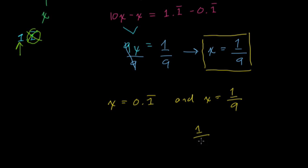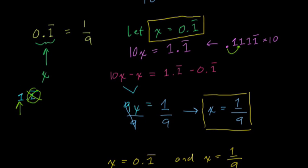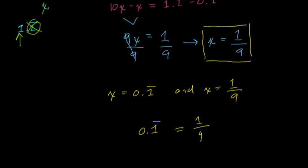then they both equal each other. So these two are now equal. And this proof can be adjusted. We multiplied x by 10 because we had a one-digit repeating sequence.